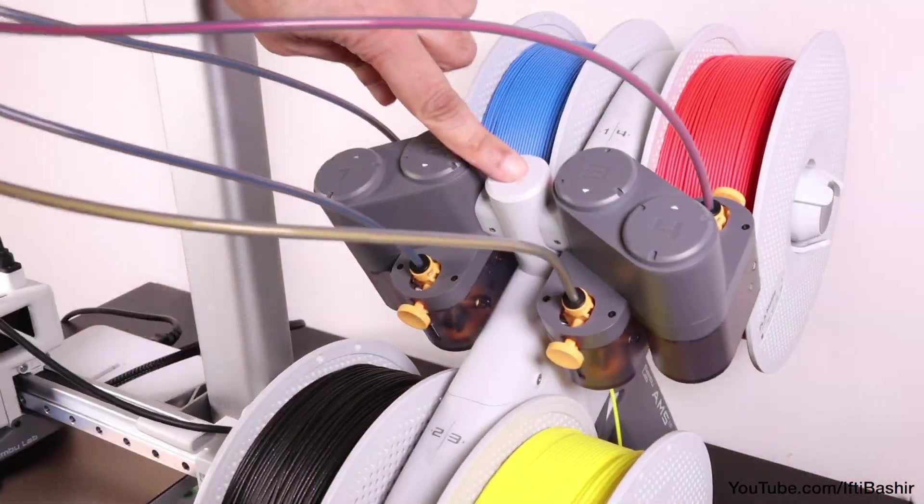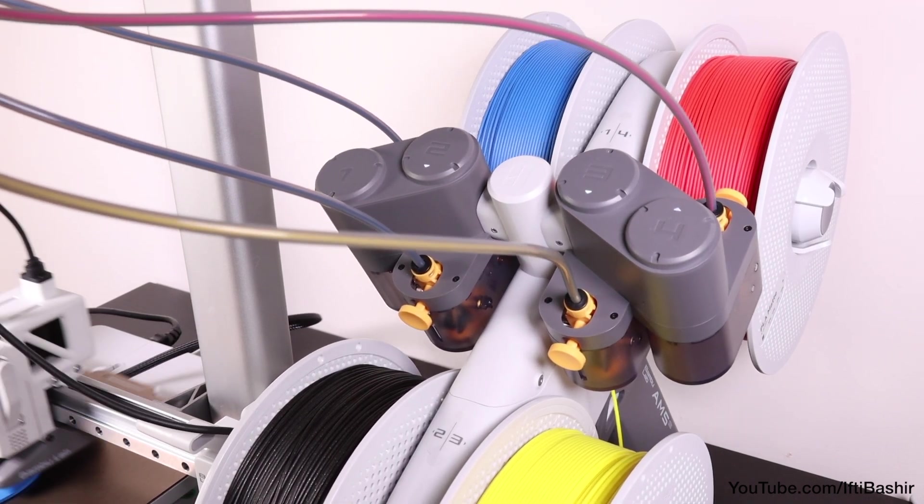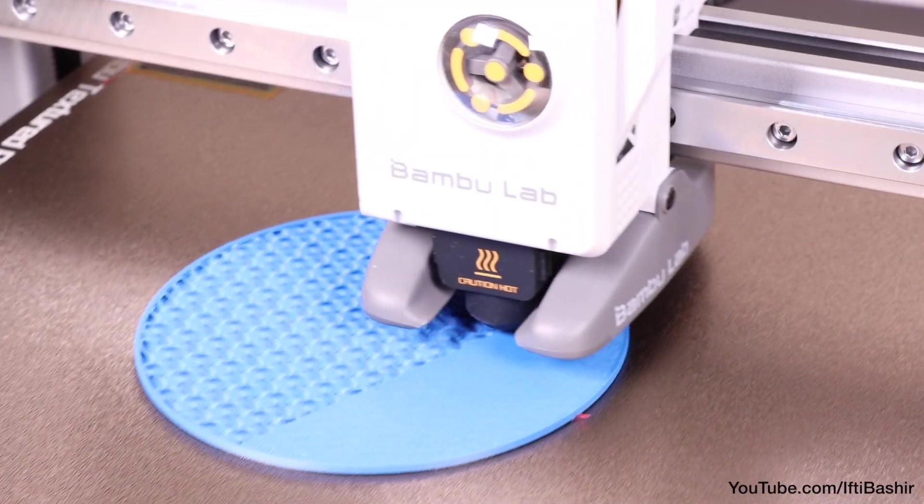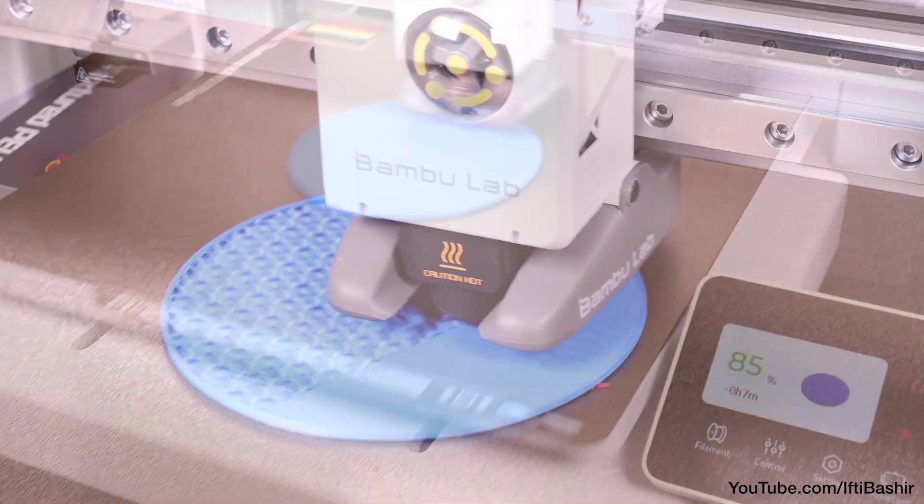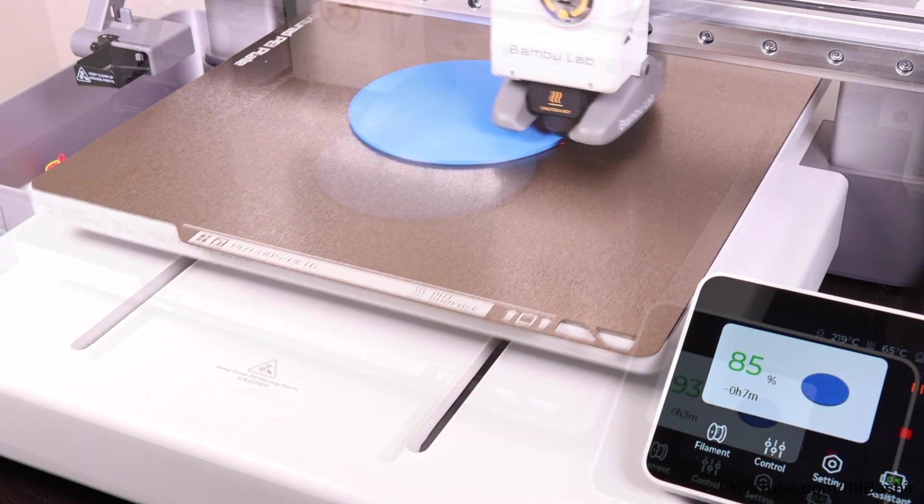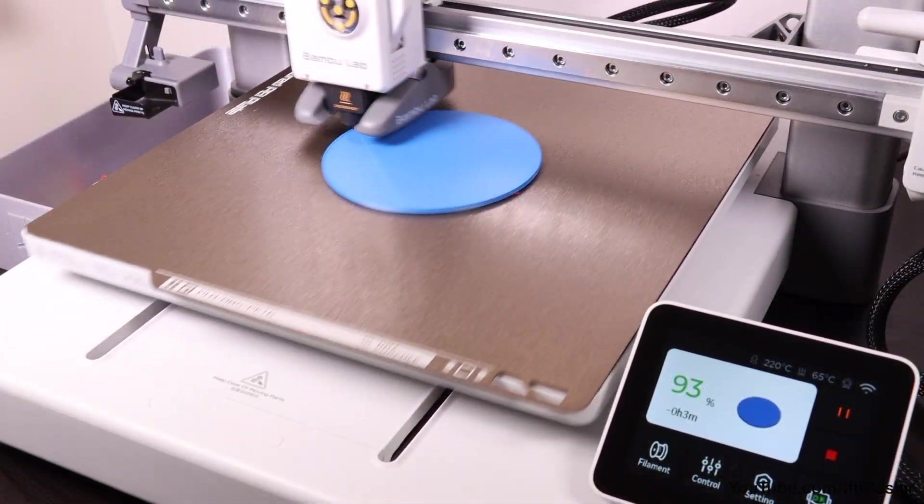The AMS could stand to be a little more sturdy and I think the tubes between it and the A1 are too short but it does work very well at making multi-colour prints. You can't help but notice how loud the thing is though depending upon the layer being printed. Seriously, I feel it's much louder than a Prusa Mk4s for instance. Not a problem if it's in a workshop but otherwise it is a point to consider before purchase.